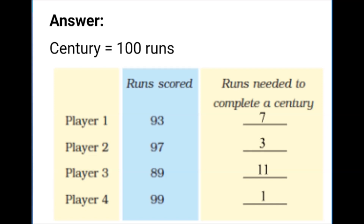Player 4 is very, very close. He has scored 99 runs. He better be careful because he just needs one more run to score a century.